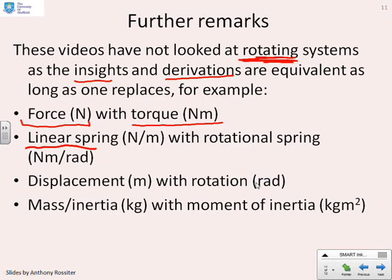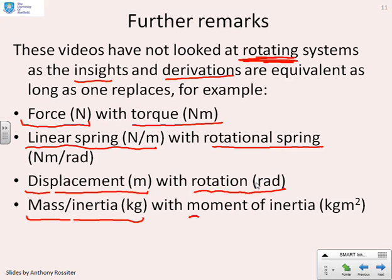Where you had a linear spring, with stiffness maybe newtons per metre, you're going to have some form of rotational spring which resists rotation. And that may have units, newton-meters per radian. Where before you had displacement in metres, now you're going to measure displacement as a rotation in radians. Where before maybe you had a mass inertia in kilograms, now you want a moment of inertia, kilograms-meters squared. But otherwise, you'll find apart from the change of units, the insights and the derivations are equivalent.